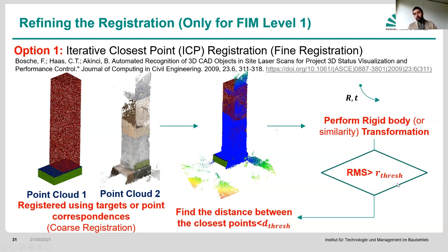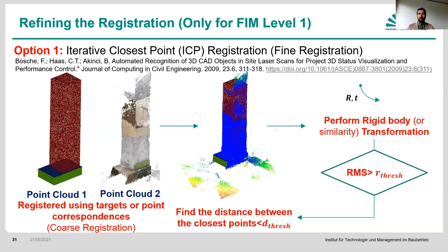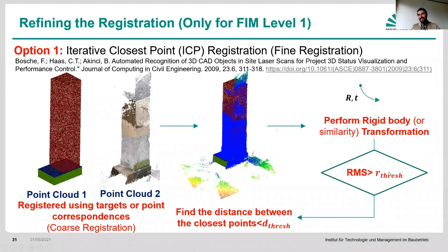If the RMS is smaller than a predefined threshold, the registration is considered good. Sometimes, instead of using an absolute threshold value, you say: if the RMS difference between the previous iteration and the next iteration is less than some small arbitrary value like 0.01, you exit the algorithm. It's not going to get much better after that, and this approach can help convergence since an absolute threshold can be challenging to define.